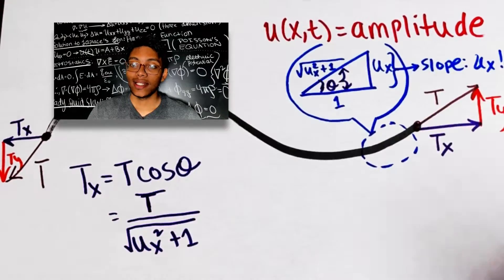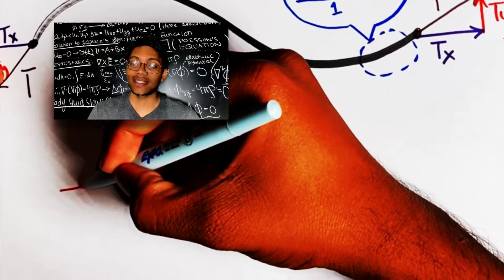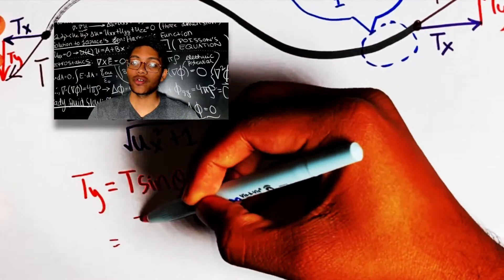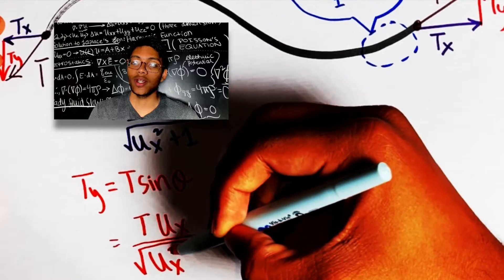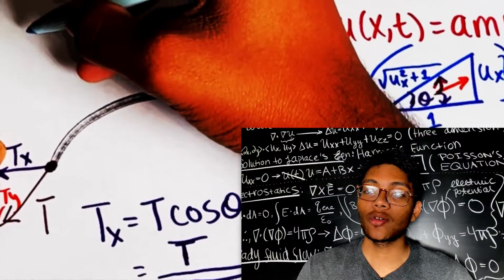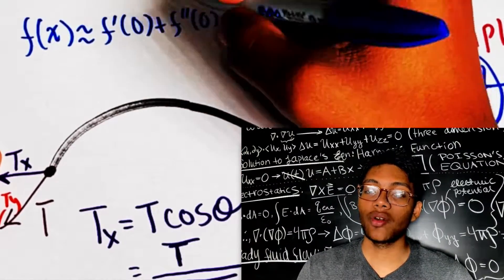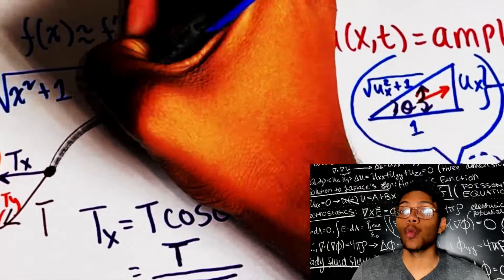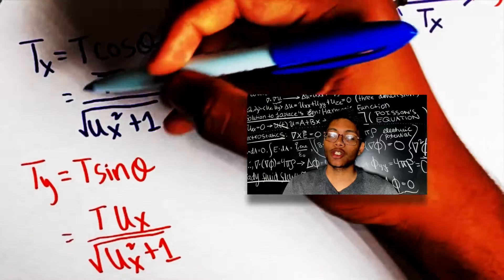Now we can repeat the same thing with T_y. We find that T_y is T times u_x over square root of u_x squared plus 1. Now we can use something known as the Fourier series to decompose the square root of u_x squared plus 1 and approximate it to the first order as just 1. And so that simplifies our expressions greatly.